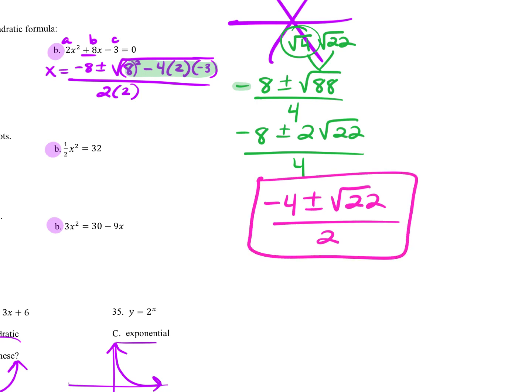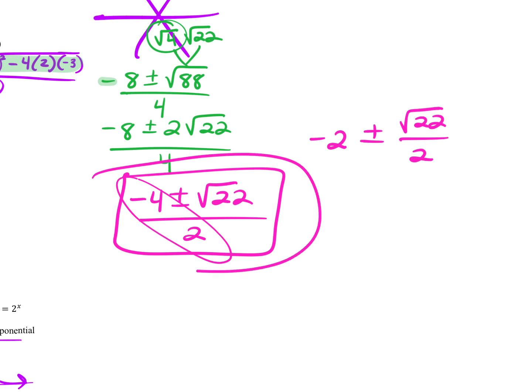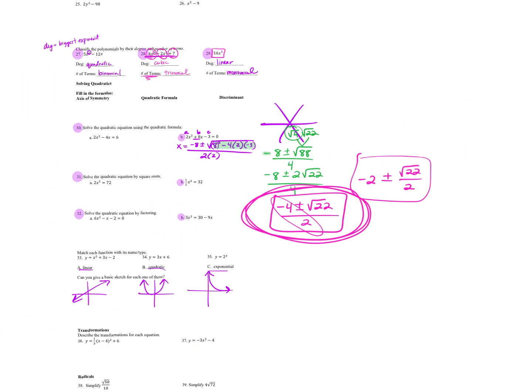Negative 4 plus or minus the square root of 22 over 2 and call that your answer. Or you can break it into two parts. If you do that, you can divide that. So negative 4 over 2 is negative 2 plus or minus the square root of 22 over 2. This is the one I usually did in class, but this is not wrong. So either way.